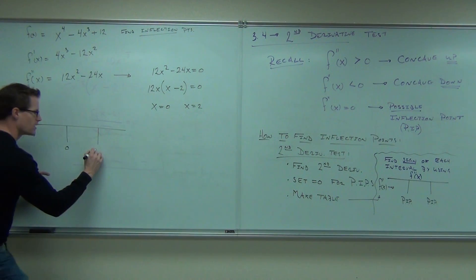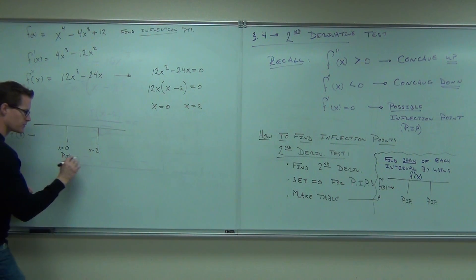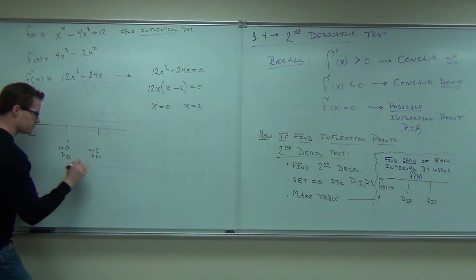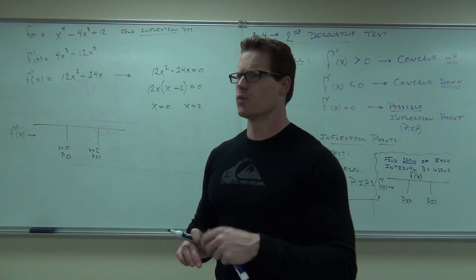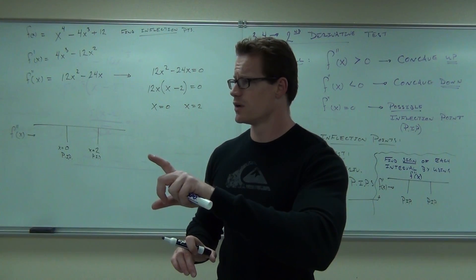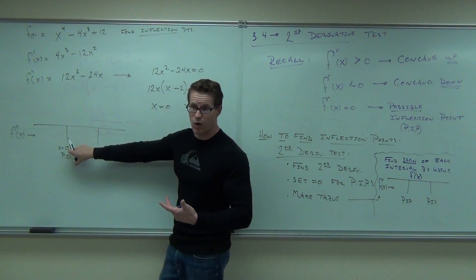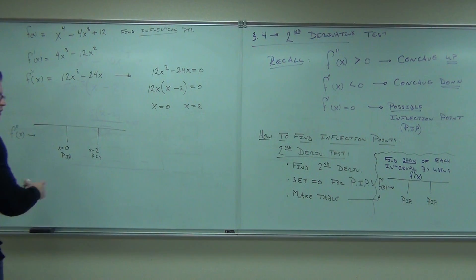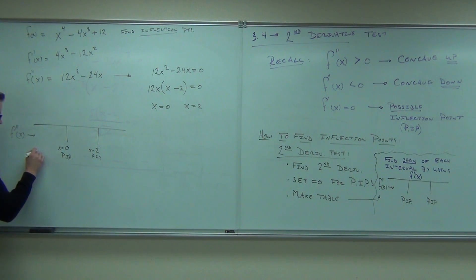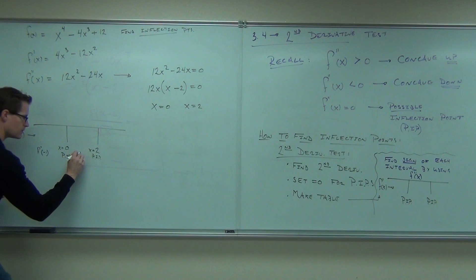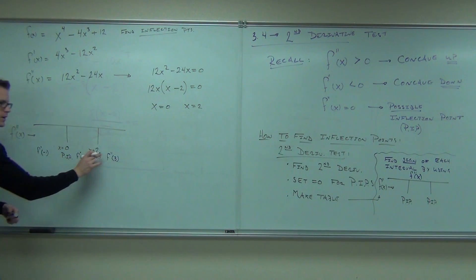These are our PIPs — possible inflection points. How many intervals do we need to check? Let's check all three, in the second derivative, because that's concavity. I would probably check negative one, one, and three. Remember, I don't care about the actual number — I care whether it's positive or negative, that's what's key. F double prime of negative one, one, and three — we're going to plug those into our second derivative and see whether it's positive or negative.